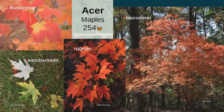The other maple I want to mention — one of my favorites — is Acer leucoderme, the chalk maple. It only grows 12 to 30 feet, so it's a nice smaller one. Sun to part shade, moist to dry soil. It can be used as a single specimen or in a grouping, and they have good fall color.